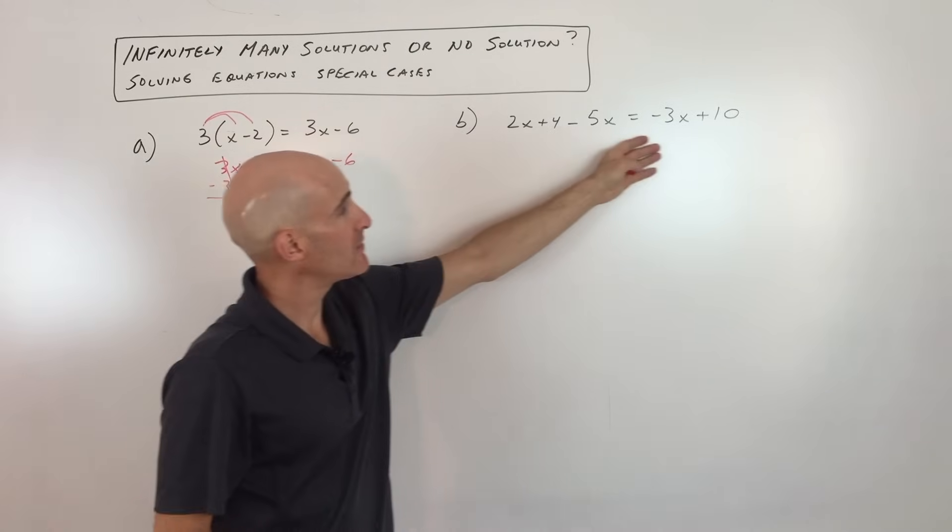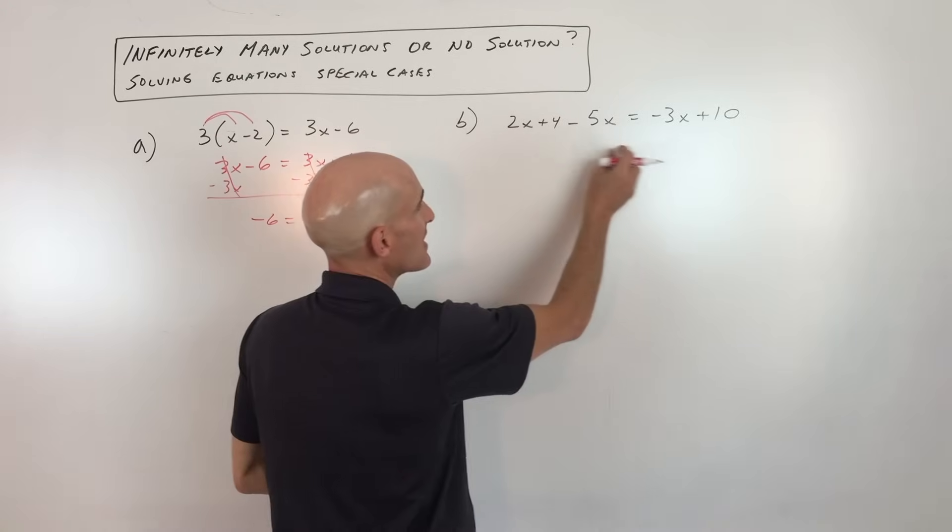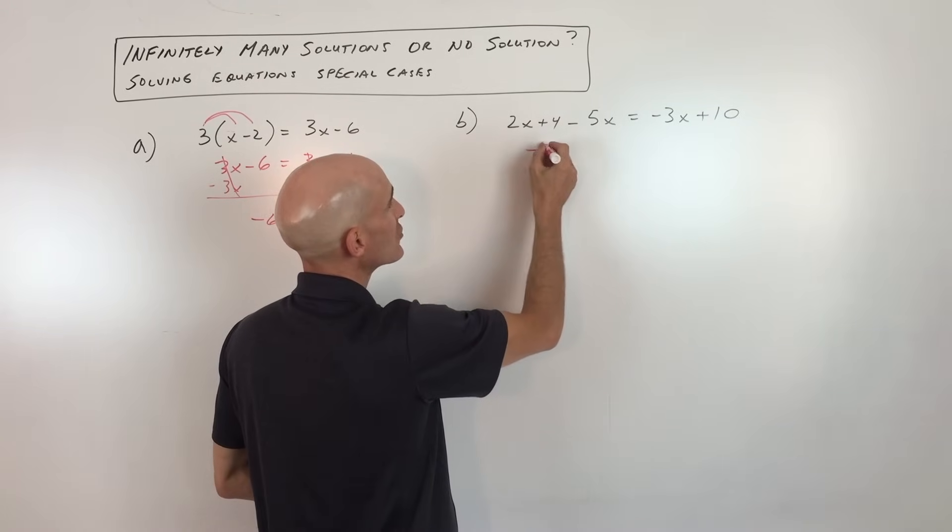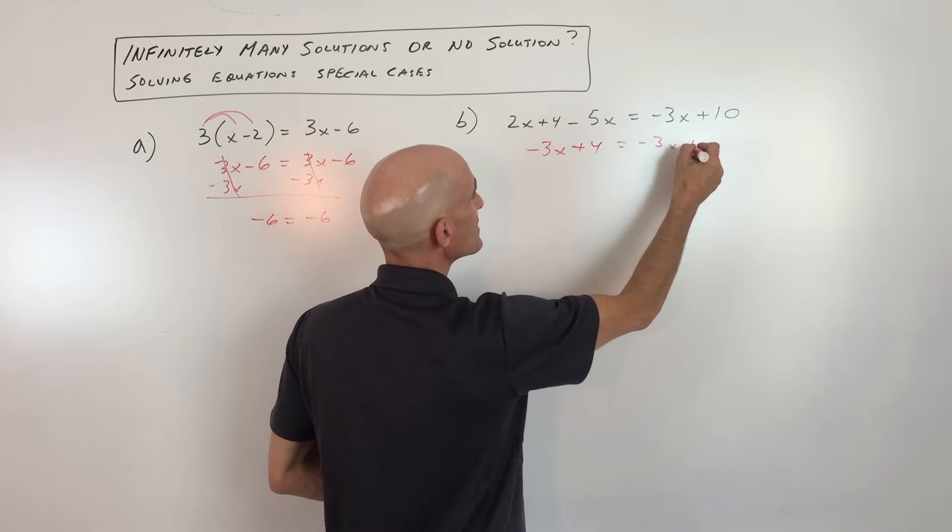Okay, now in example number B, letter B I should say. Same process. You want to simplify the left side, simplify the right side as much as you can. So I'm just going to combine like terms. That's a negative 3x plus 4 equals a negative 3x plus 10.